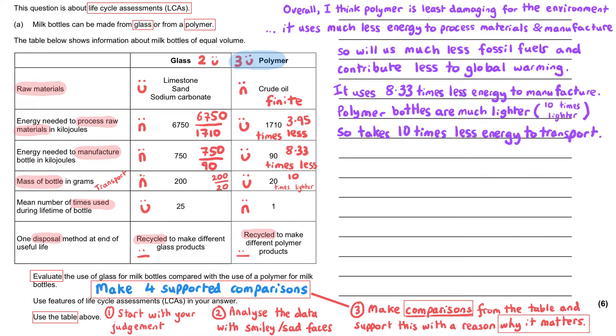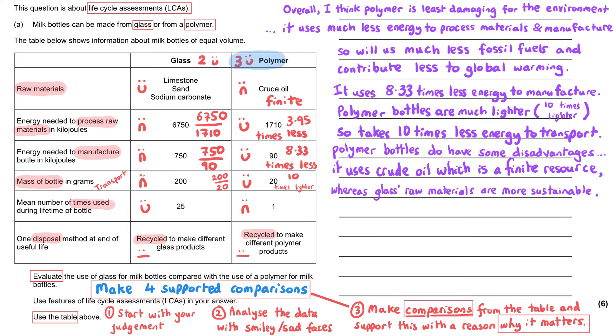And then we should maybe finish by saying, I still think polymer is better, even though there are a few negatives. And let's list those. The first negative is that the polymer uses crude oil. And we know that crude oil is a finite resource that will eventually run out, whereas glass has much more sustainable raw materials.